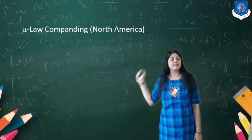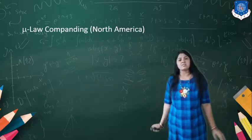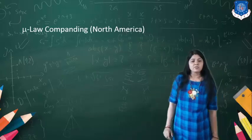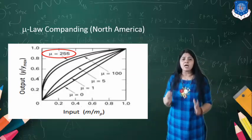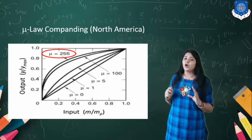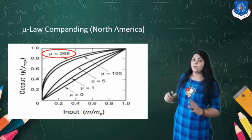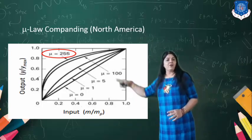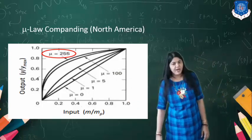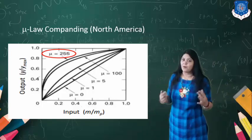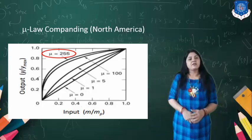Another law for companding is the mu-law, used in North America. In broadcasting and all communication systems there, a system referred to as mu-law companding is used. Looking at the reference graph, the x-axis is the input M/Mp value and the y-axis is the output. When mu = 255, we get maximum companding output, and with compression and expansion, we can receive the signal at the receiving end without any distortion.